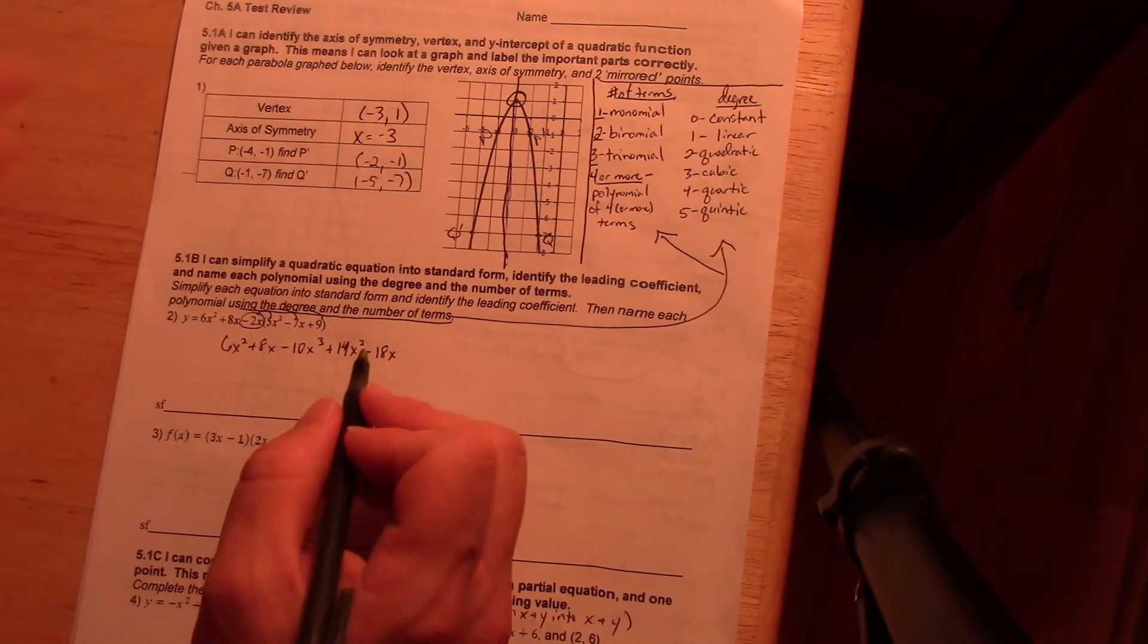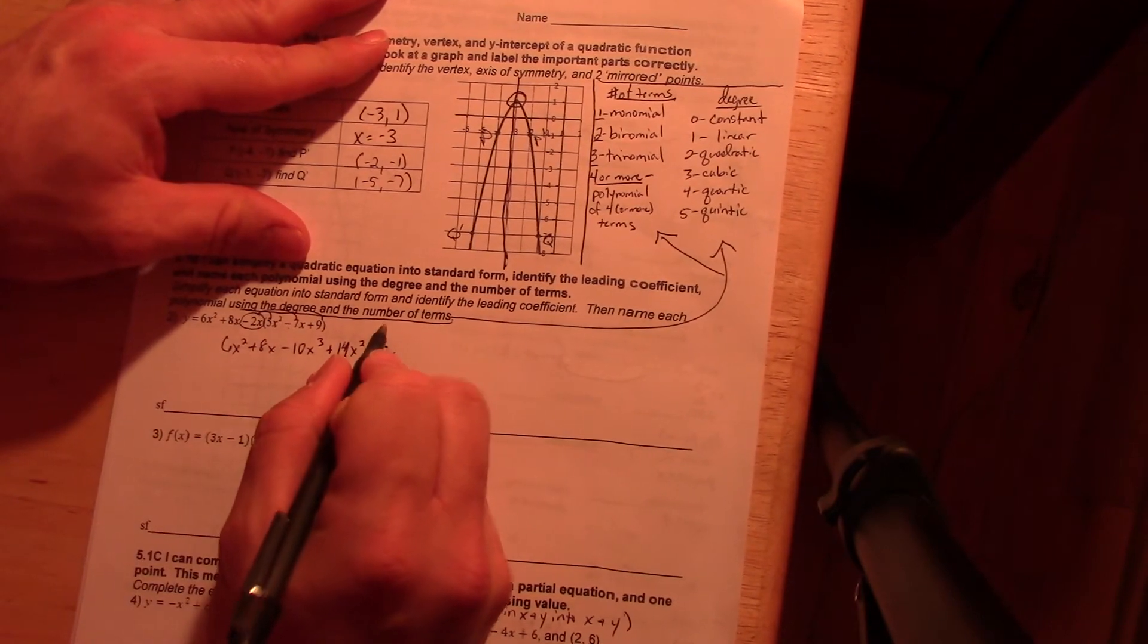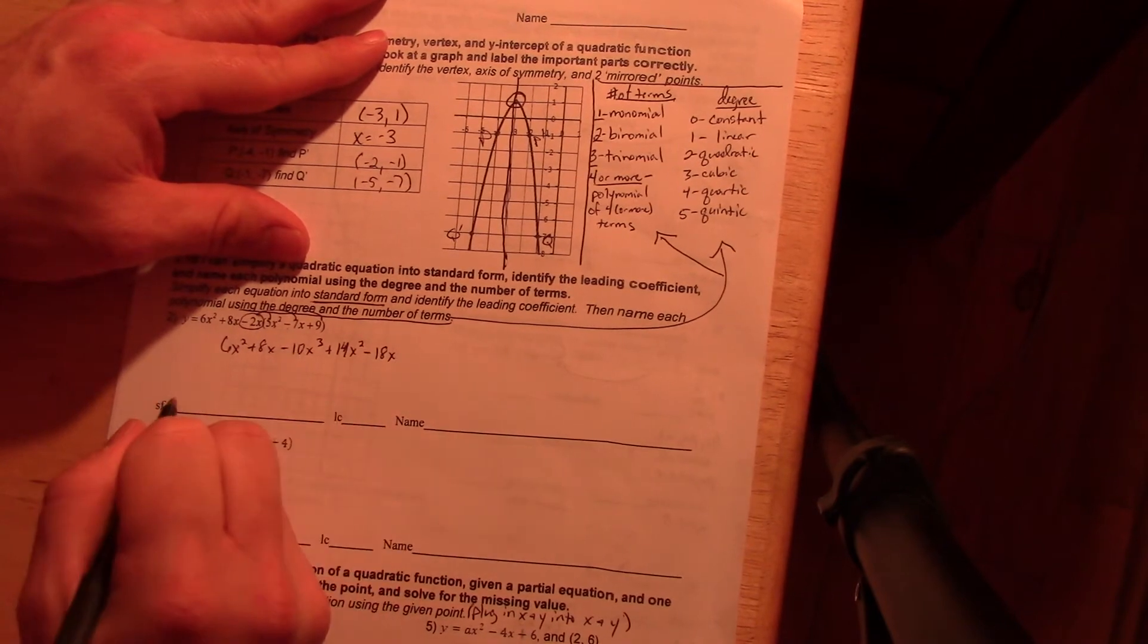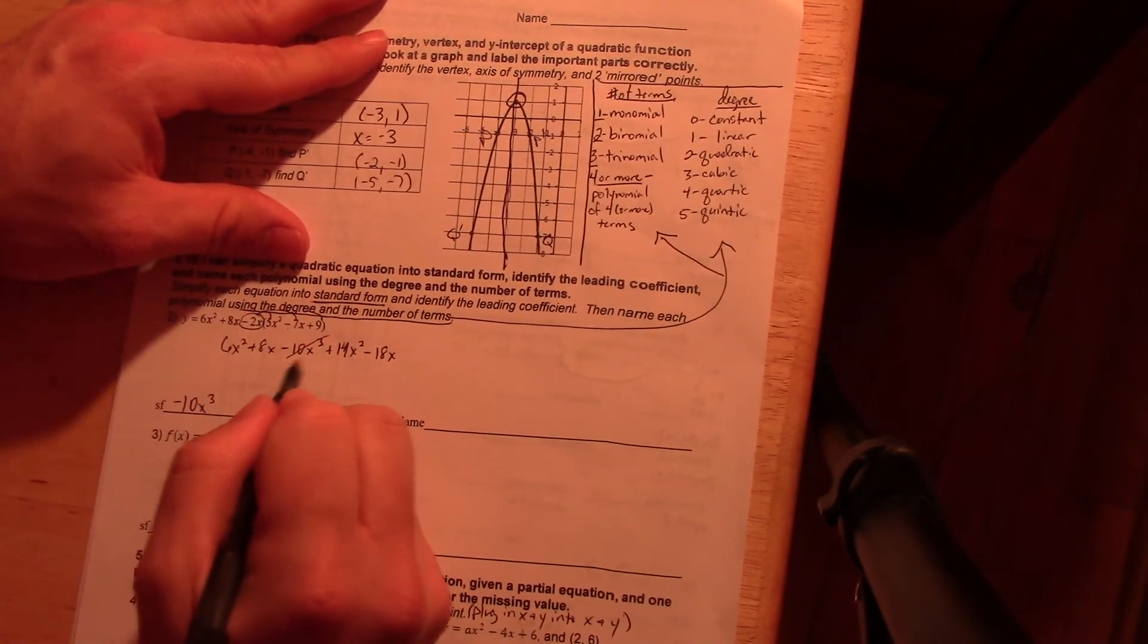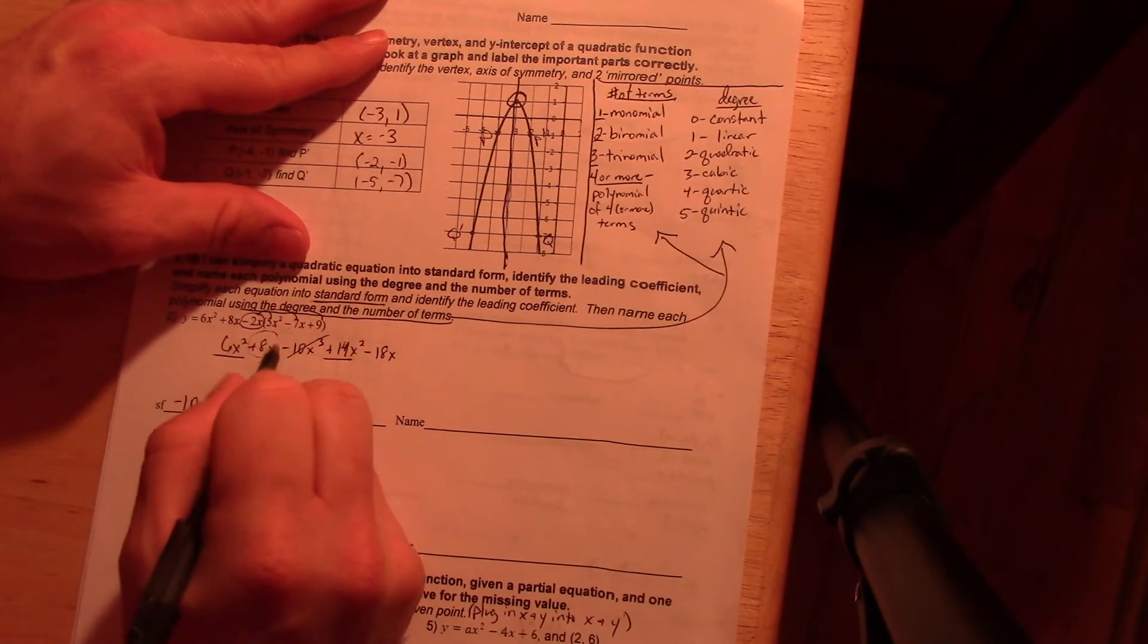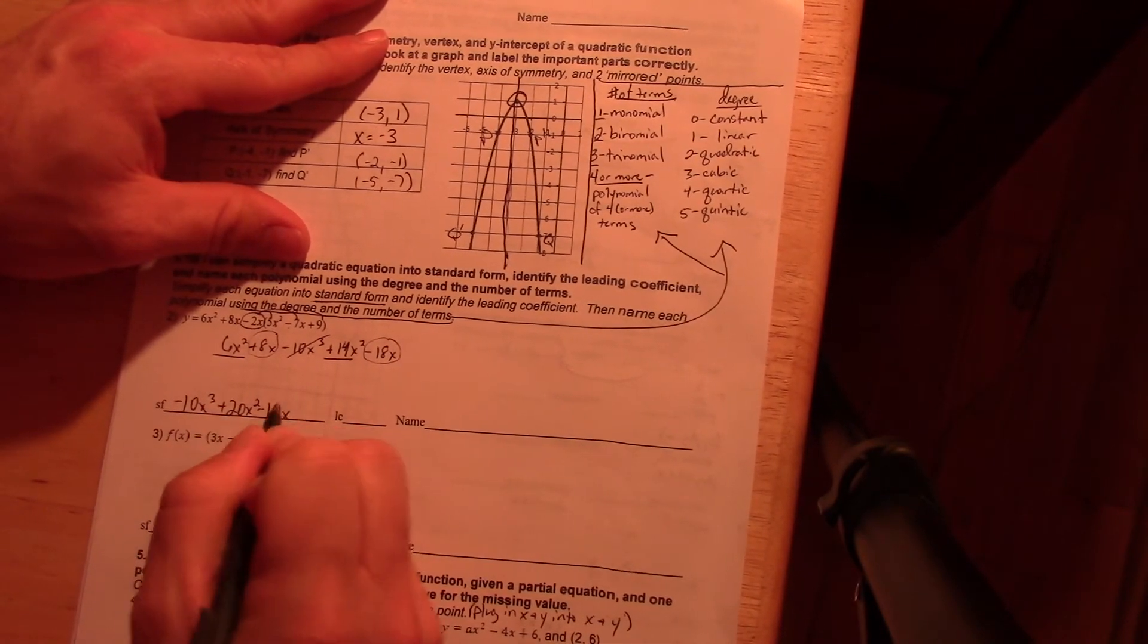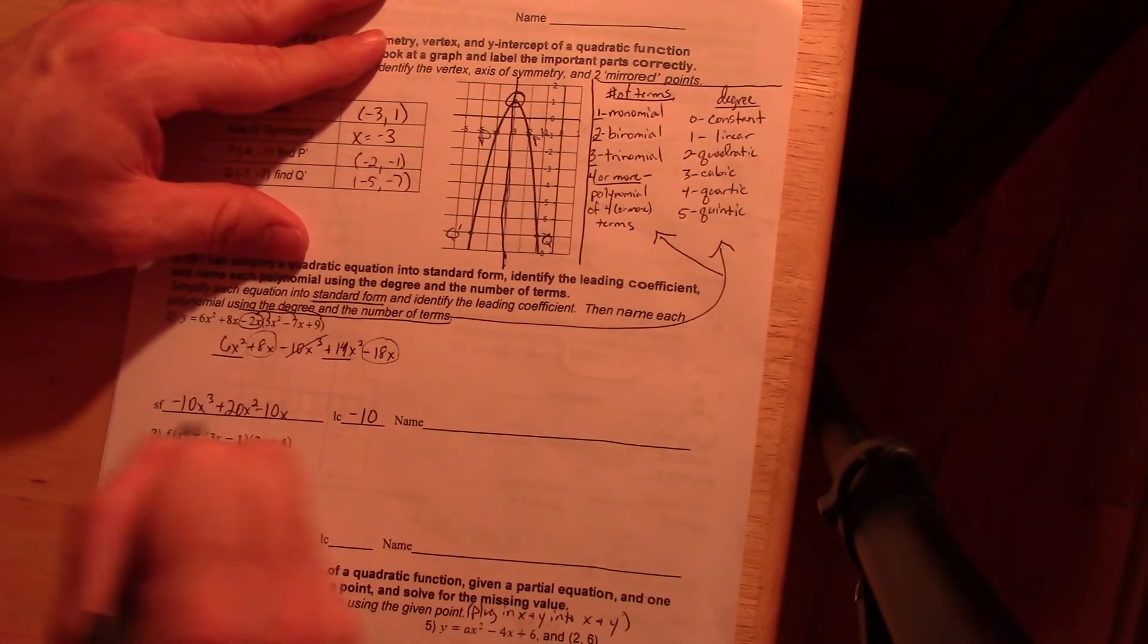Now combine like terms and put it in standard form. In standard form, it says it right here, is writing it from highest exponent. So negative ten x cubed would be first to lowest. I took that one out. I am going to combine these two to give me twenty x squared. I have got an eight x and a negative eighteen x to give me negative ten x. And that's actually it. My leading coefficient here is the number that is in front.